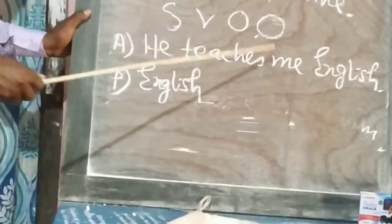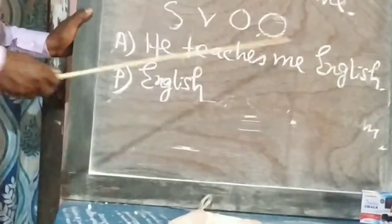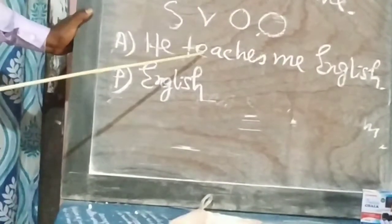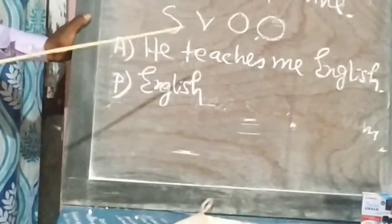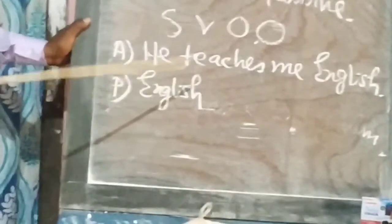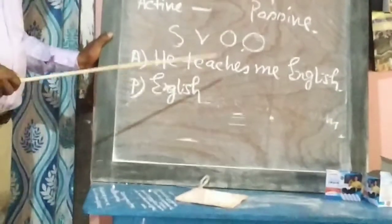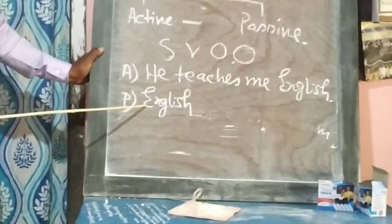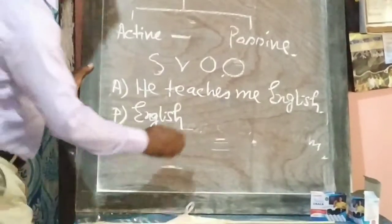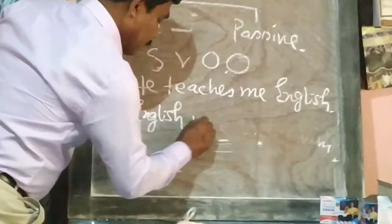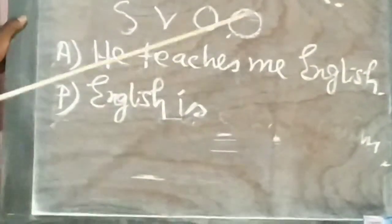He teaches English. In present indefinite tense, we use a be verb. The present tense be verbs are: am, is, are. For third person singular, we use 'is'. So 'English' becomes the subject: 'English is taught.'